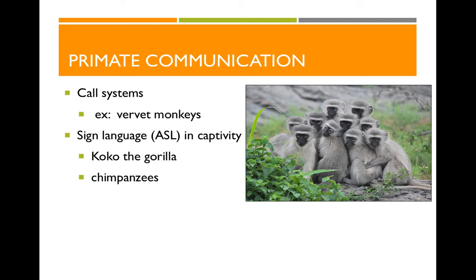What's cool about experiments with vervet monkeys is that it shows a direct relationship between the vocalization and the specific predator — they're not interchangeable. In that sense, those alarm calls are almost similar to words. We know that words are symbols we use in our linguistic systems, and one word has a specific meaning — it's not interchangeable. If I call something a tiger, it has to be a tiger. So we're seeing in these vervets a little element of something symbol-like that's perhaps important for understanding the origins of language in our own species.